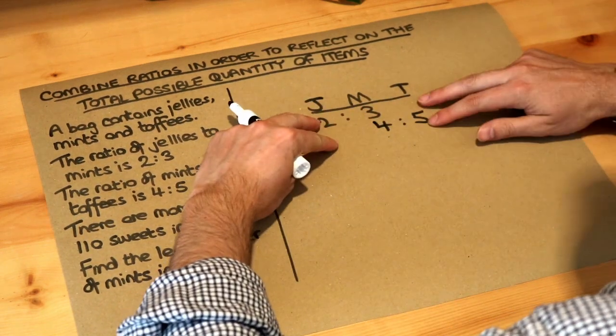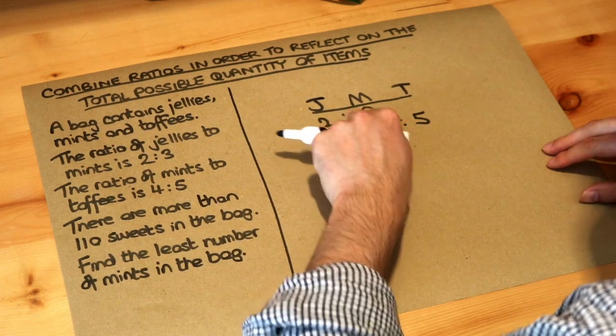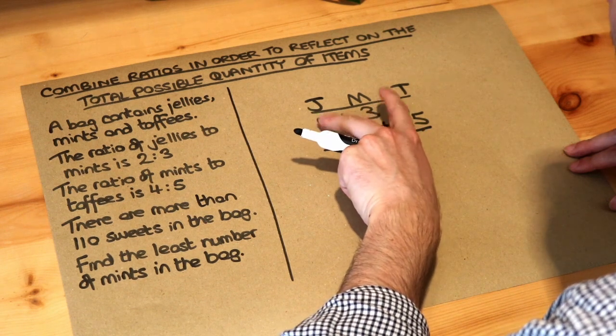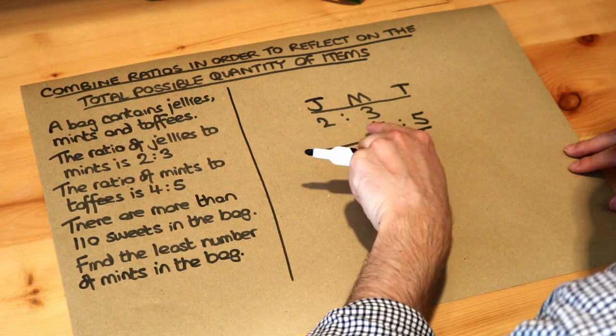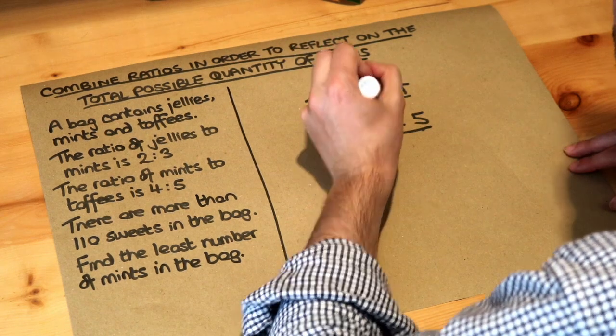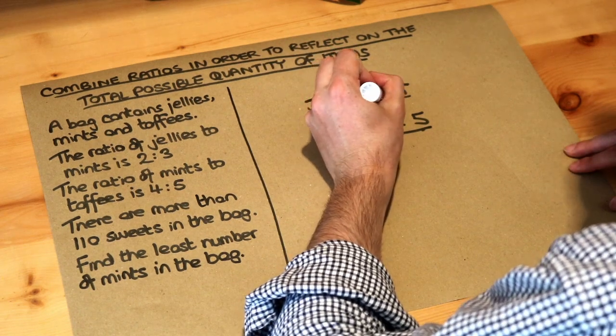To combine these into one ratio, these parts, the mint parts, have to be the same. Now remember we can scale ratios by multiplying each part by the same number. So 3 and 4 both going to 12. So to get this to 3 to 12 we times it by 4.